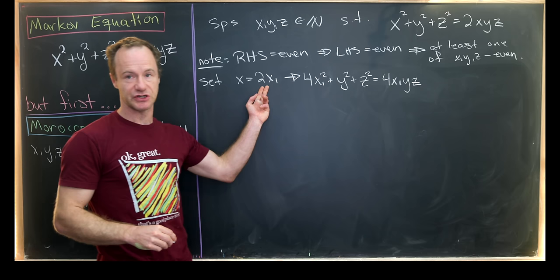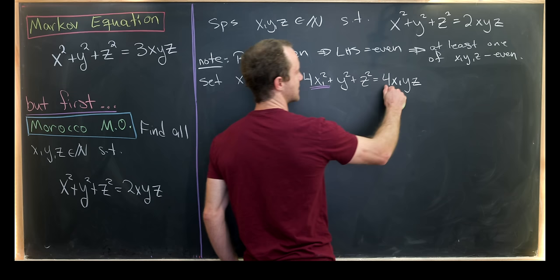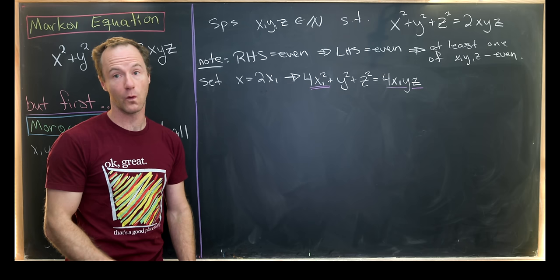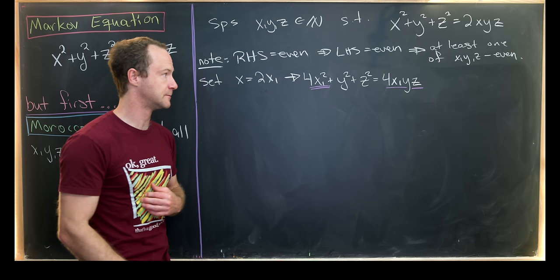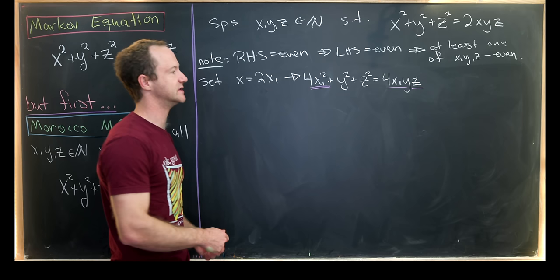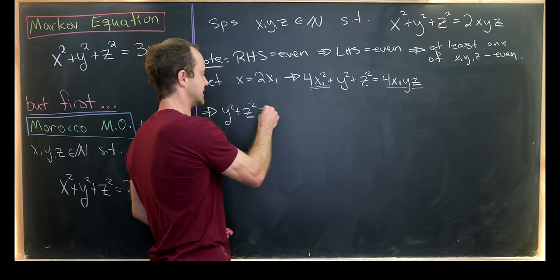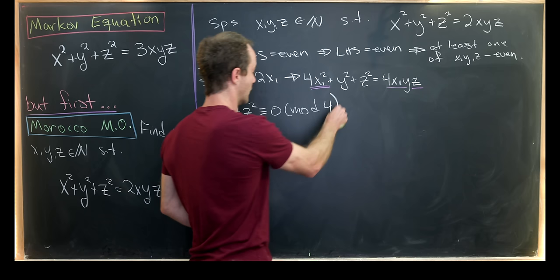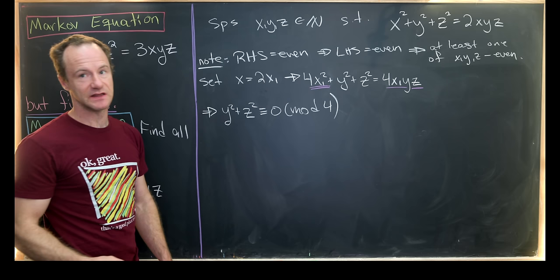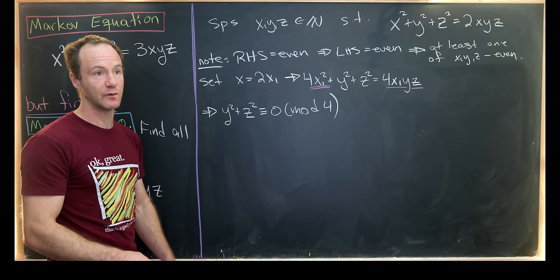Just plugging this version of x exhibited by two times x₁ into our original equation. But now looking at our new equation, we'll see that this term right here and this term right here are both multiples of four. So that motivates us to reduce modulo four. And so if something's a multiple of four, then it's congruent to zero mod four. So let's see. Reducing mod four will give us y² + z² ≡ 0 (mod 4).